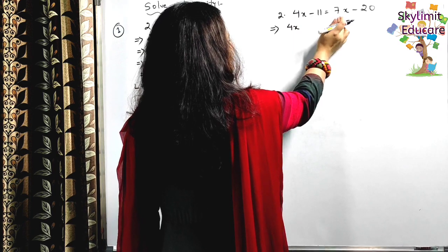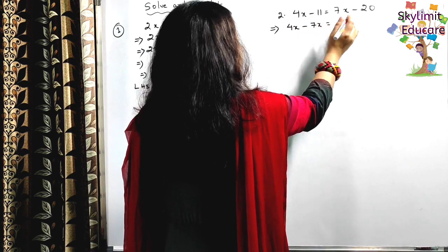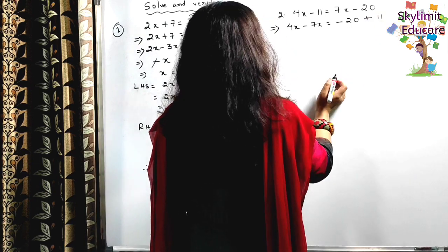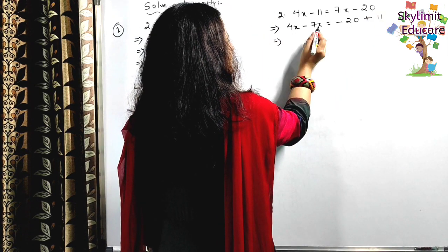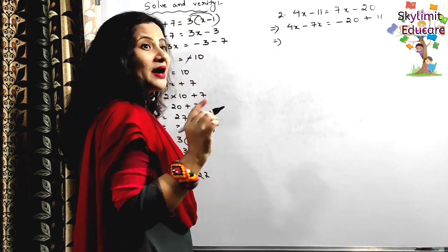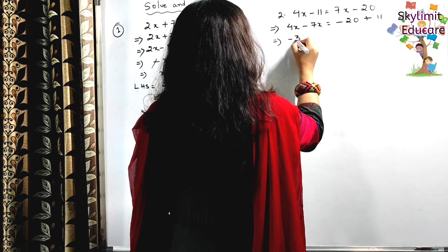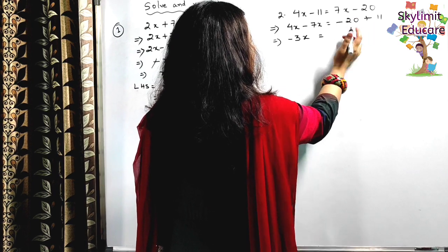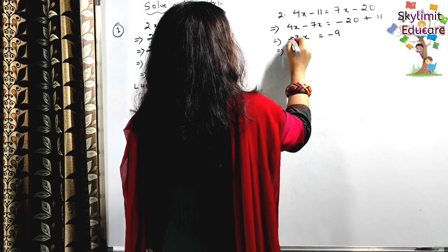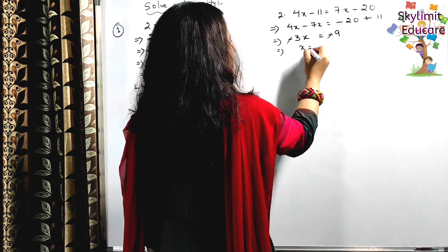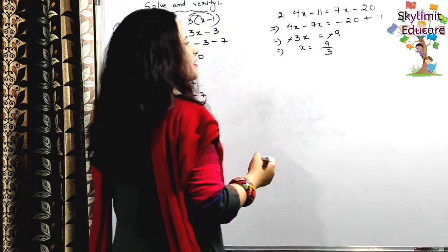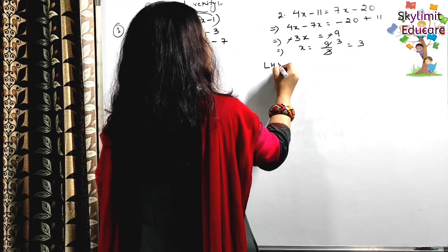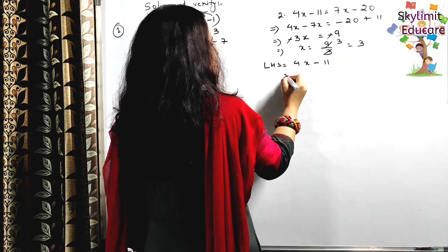Now let's come to the next question. The same approach applies. 4x is on the left; bring 7x to the left side — it becomes minus 7x. On the right side, minus 20 remains. Minus 11 shifts to the right and becomes plus 11. Both terms with x are like terms: 4 minus 7 gives minus 3x. On the right: minus 20 plus 11 — subtract: 20 minus 11 is 9, and the larger number is negative, so minus 9. Minus minus cancels, giving x = 9 ÷ 3 = 3.